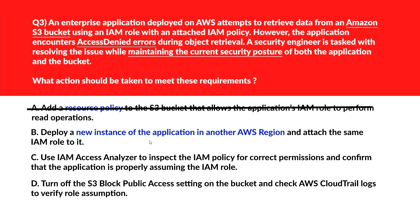Option B says: deploy a new instance of the app in another AWS region and attach the same IAM role to it. Redeploying in another AWS region doesn't address role usage or policy misalignment and won't solve an access denied condition. Hence incorrect.